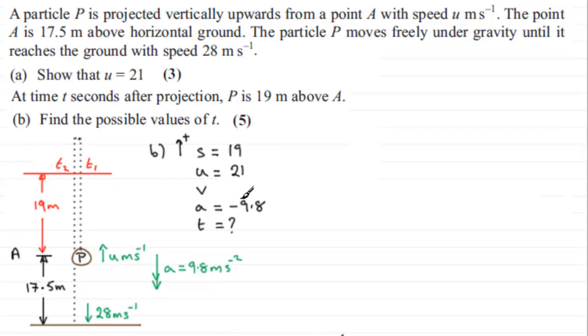Well, what is the formula that connects S, U, A, and T? We should know it. That formula is going to be S equals UT plus a half AT squared. So we'll just write it up here, give us a bit of room to just work this through. So we're collecting these variables together, going to use this formula here.